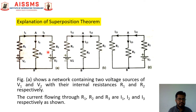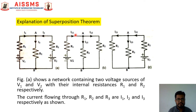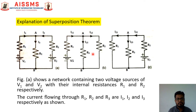Now let us consider V1 source acting alone. So V2 source must be replaced by its internal resistance R2. This is shown in Figure B. In this case, I11, I12, and I13 are the three currents flowing through resistances R1, R2, and R3 respectively. By using a suitable network simplification technique, we can easily find out the current flowing through branch AB.